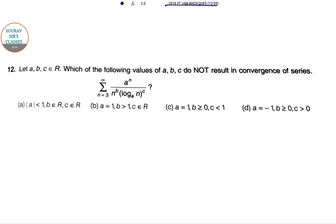We have the following values a, b, c. Which of the following values of a, b, c does not result in convergence of series? So we have this particular series, we know that this is convergent if P greater than 1.